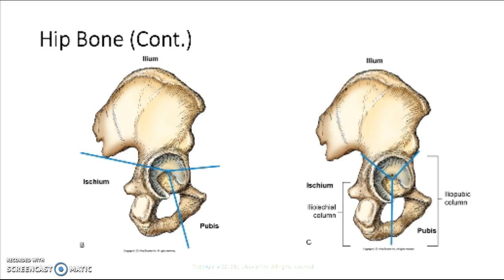Here are some of the other distinguishing areas of the hip bone, all related to the acetabulum. In the anterior portion you have the iliopubic column, and in the posterior portion you have the ilio-ischial column — that's where the ischium and the ilium fuse posteriorly. In the front is the iliopubic column where the ilium and the pubic bone fuse.